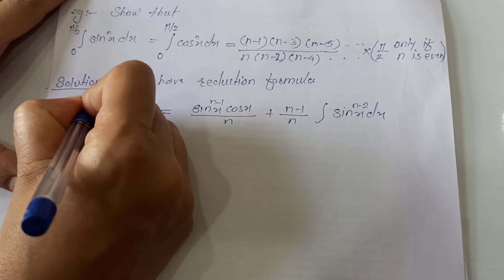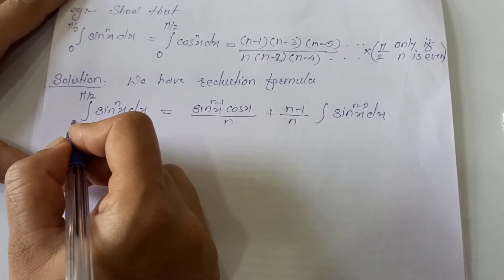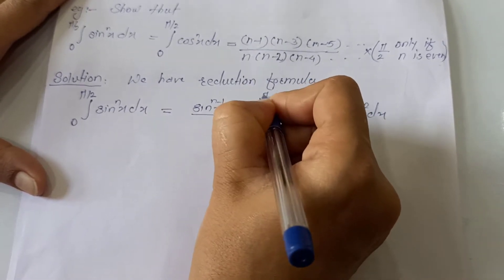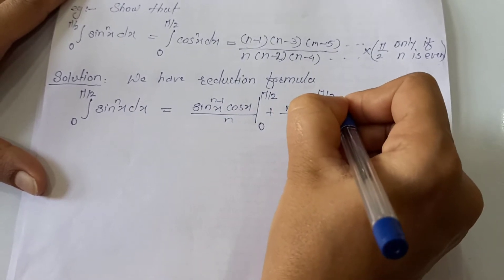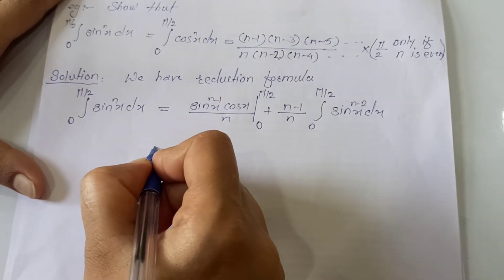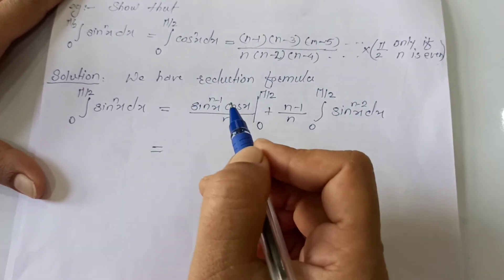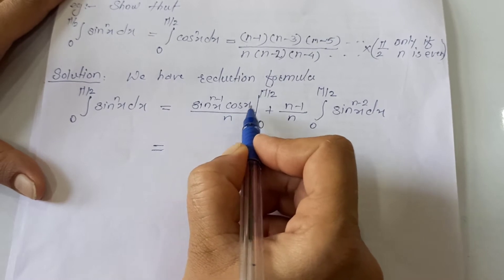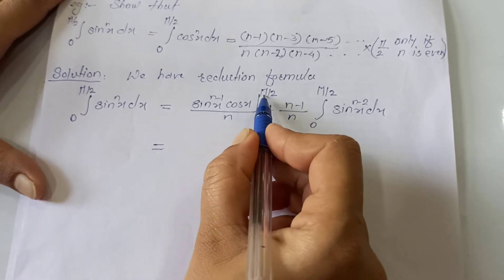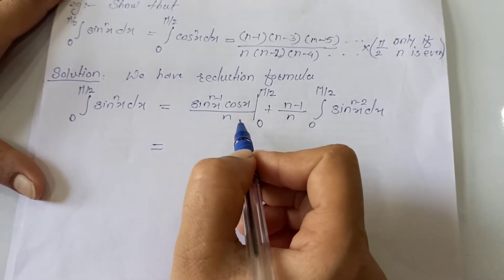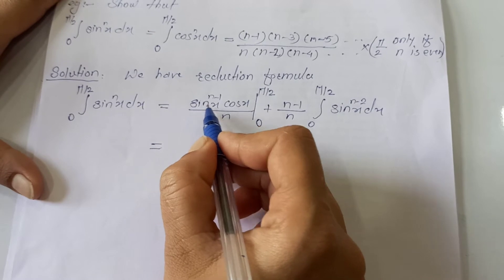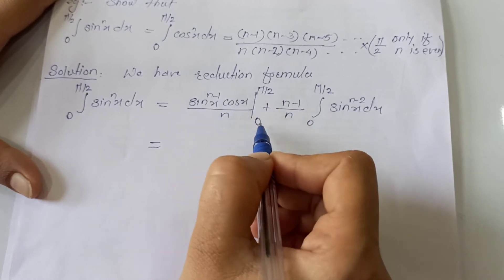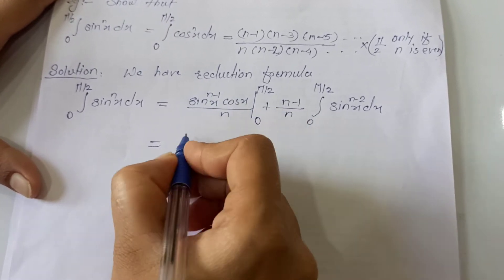So let's put the limits 0 to pi by 2. Whenever we put limits on the left-hand side, we put the same limits on the right-hand side. Now evaluate the first term. When we put the upper limit, cos(pi/2) is 0, so the entire first term is 0. When we put the lower limit, sin(0) is 0, so again the term vanishes. Whether upper or lower limit, this term vanishes, and we are left with only the integral term.